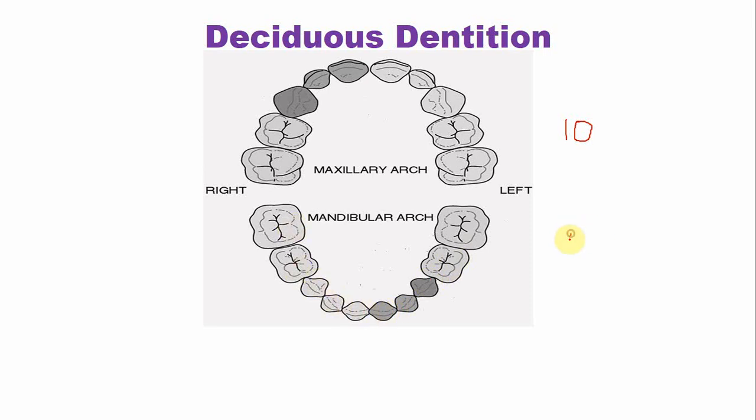And 10 in the lower arch. So the total number of teeth in the deciduous dentition are 20.